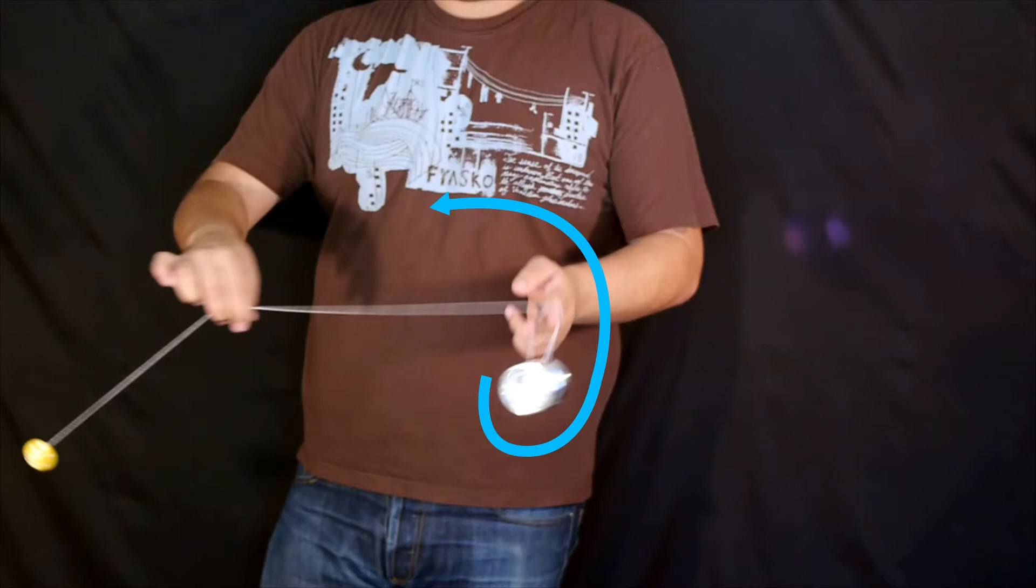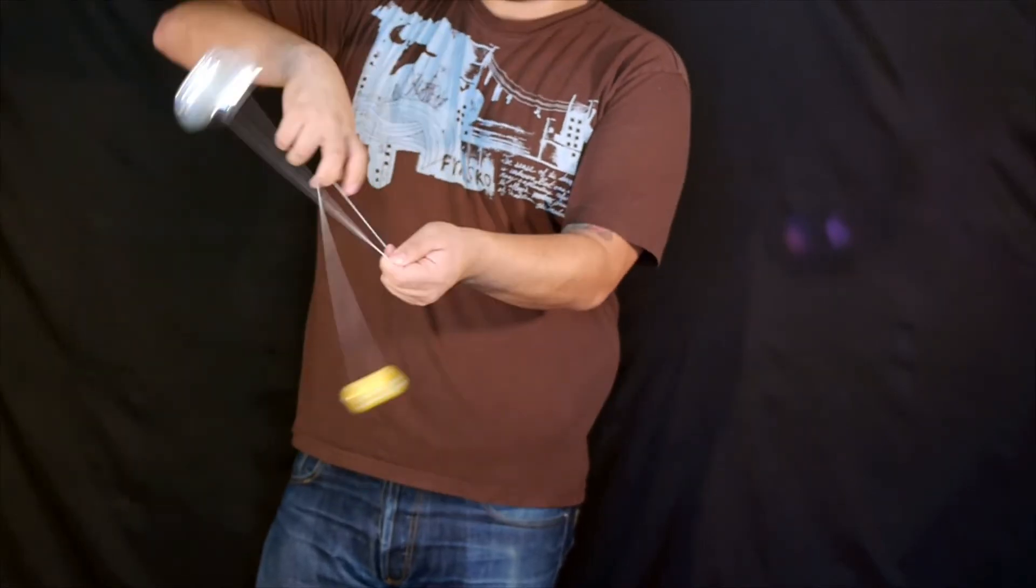Then we're going to dismount the yoyo and now you've already got the counterweight going, you're going to swing the yoyo on the outside of your arm and then come back to the inside of your arm to cross for the tangler.